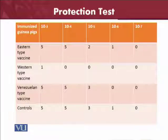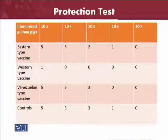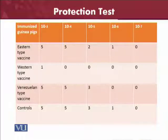We immunize guinea pigs and give them three different kinds of vaccines: Eastern type vaccine, Western type vaccine, and Venezuelan type vaccine. These are different types of vaccines because the viruses have different strains. The Asian type strains are different compared to the Western type strains and Venezuelan type. Therefore the vaccines produced by those viruses will be different if their strains are different. We give them the same dilutions — 10^3, 10^4, 10^5, 10^6, and 10^7 — and see the immune responses produced.